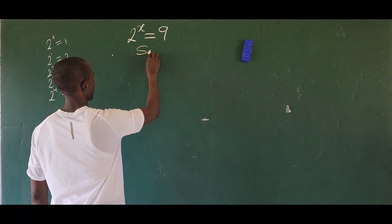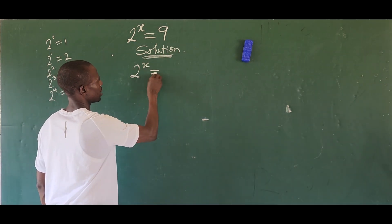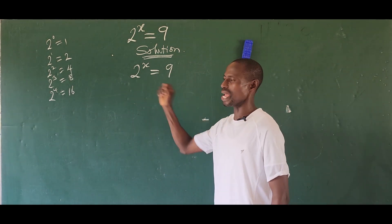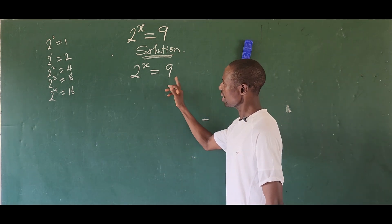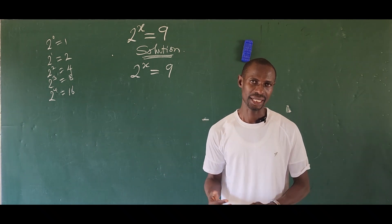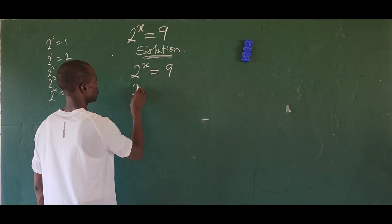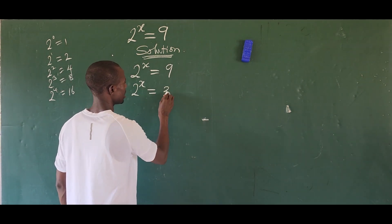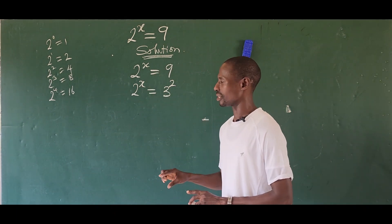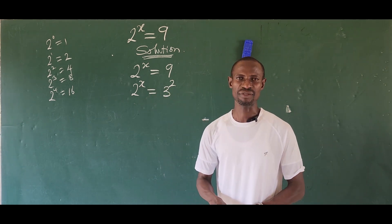So we take our solution from here. We have two to the power of x equal to nine. Now we have two as a base number — can we express nine in base two? No. But we can write nine as three to the power of two. So we now have two to the power of x equal to three to the power of two. These are two different base numbers, so we cannot equate the exponents directly.